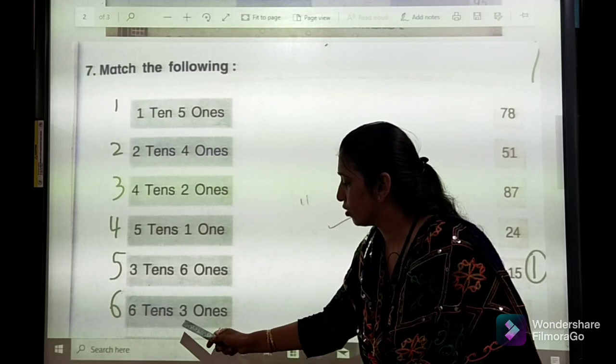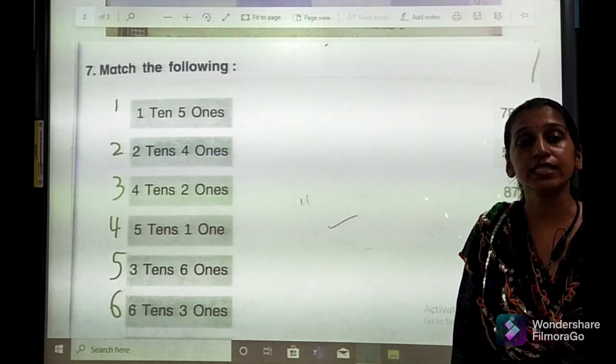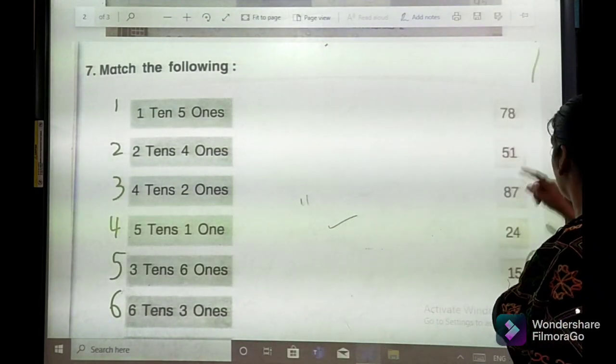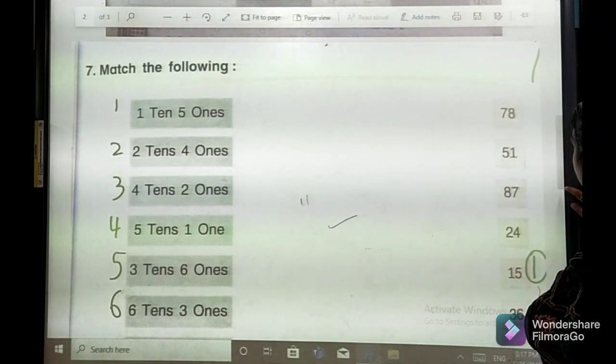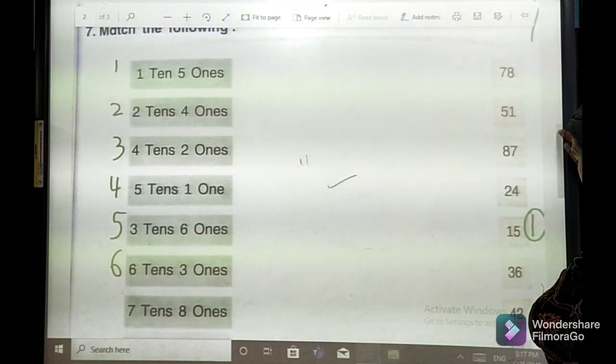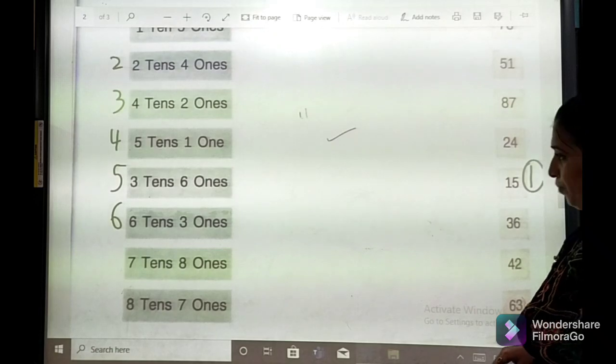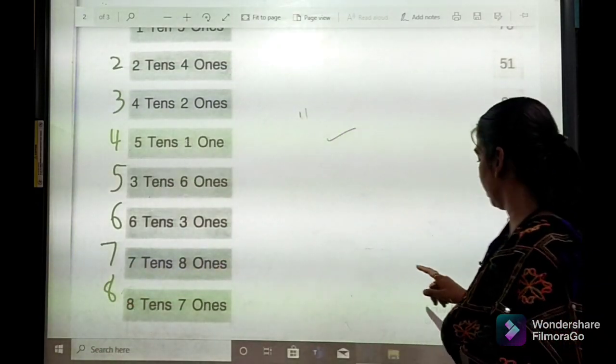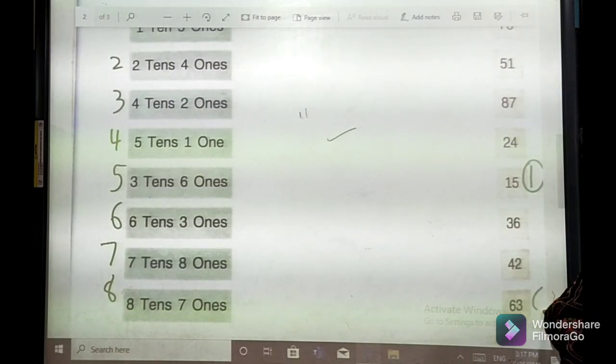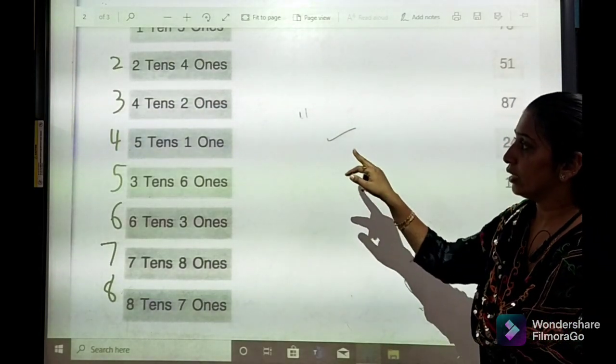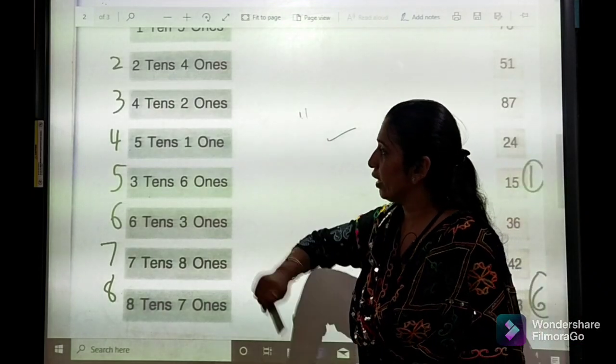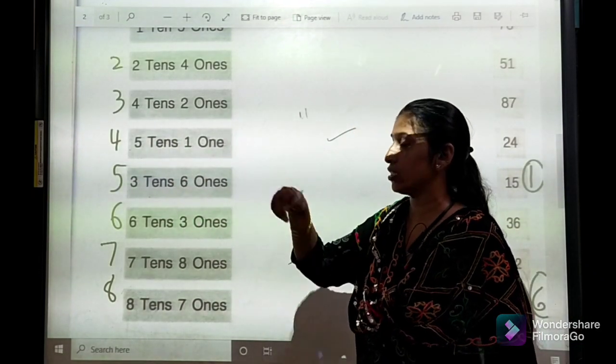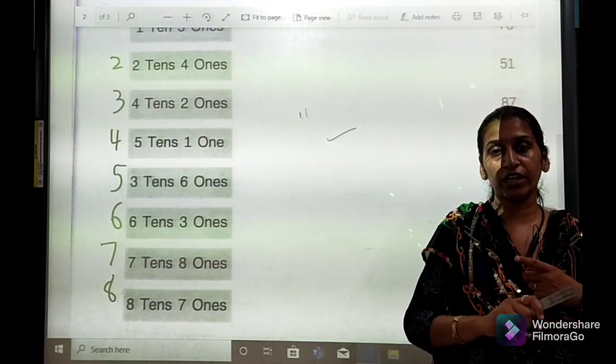One more example we will do. 6 tens and 3 ones means 63. How much option ready for me? Here. Shall I label it? Yes. We can see 63 over here. Number 6 is here.